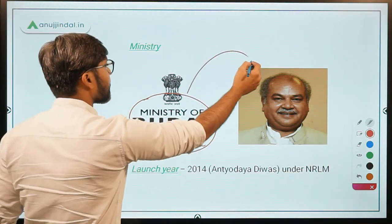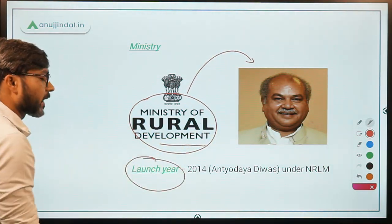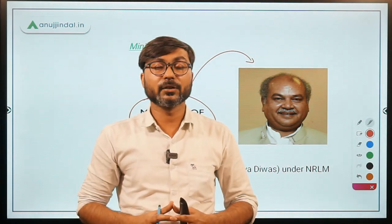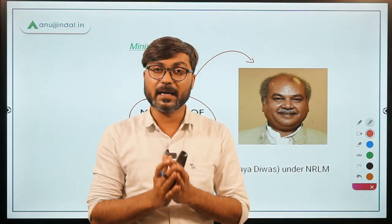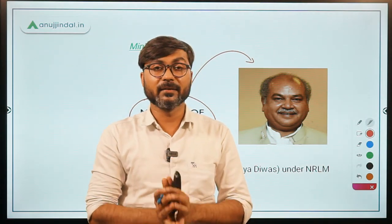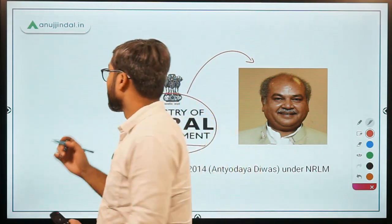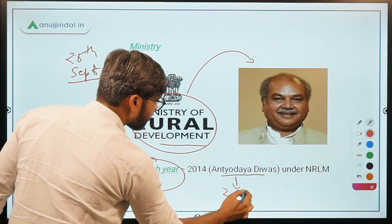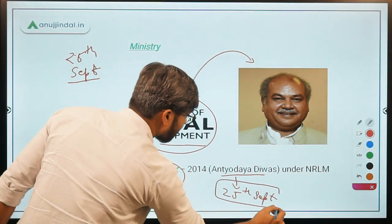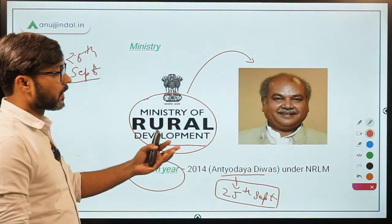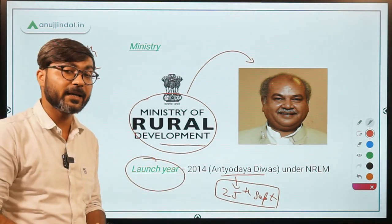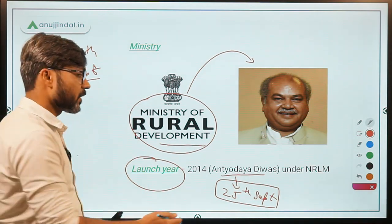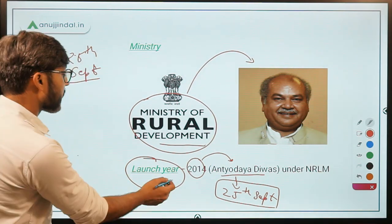The Ministry of Rural Development is headed by Mr. Narendra Singh Tomar. Regarding the launch date, you can remember it easily: it was launched on the very first Antiyodaya Divas. The first Antiyodaya Divas was observed in the year 2014 — our government announced for the first time that we are going to observe Antiyodaya Divas on 25th September, which is the birthday of Deen Dayal Upadhyay. This scheme was launched on that day, 25th September 2014.